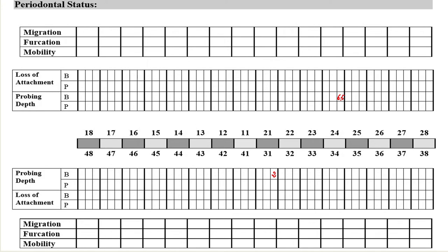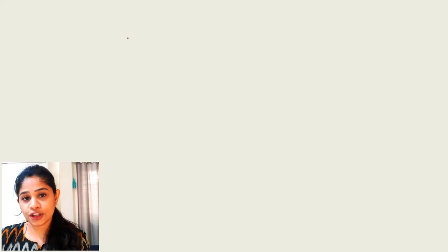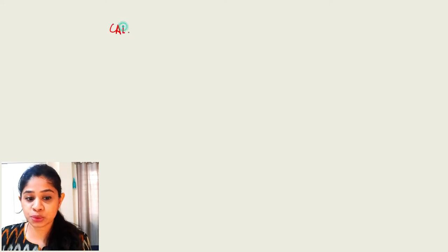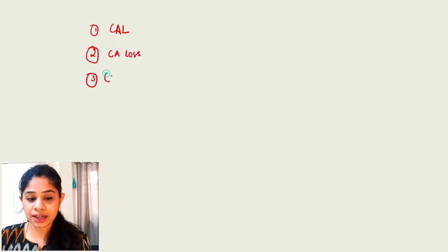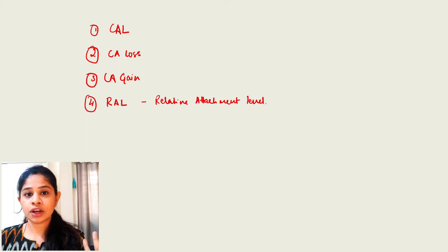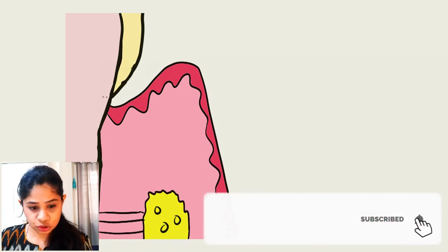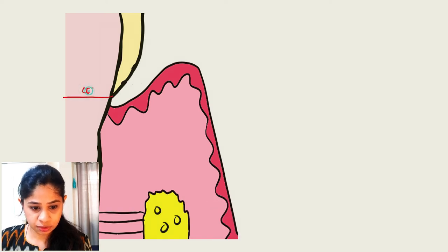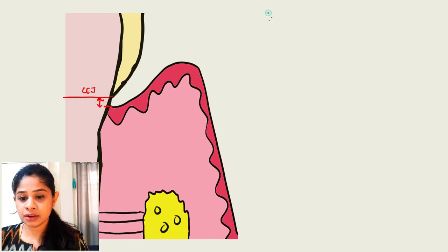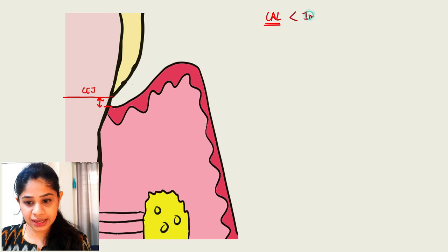Now let's talk about loss of attachment. When we talk about attachment loss, there are many terms: first is clinical attachment level, second is clinical attachment loss, third is clinical attachment gain, and ultimately we have the relative attachment level. Clinical attachment level is the distance between the cementoenamel junction to the base of the pocket. If this is the CEJ and this is the base of the pocket, then that distance is the clinical attachment level. In case of health, the clinical attachment level is always less than 1 mm.